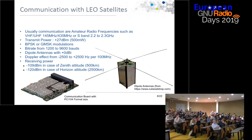The receiving power depends on the position of the satellite compared to the ground station. At zenith altitude, around 500 kilometers, it will be something like minus 110 dBm. For the satellite at horizon altitude, around 2,500 kilometers, it will be minus 120 dBm.